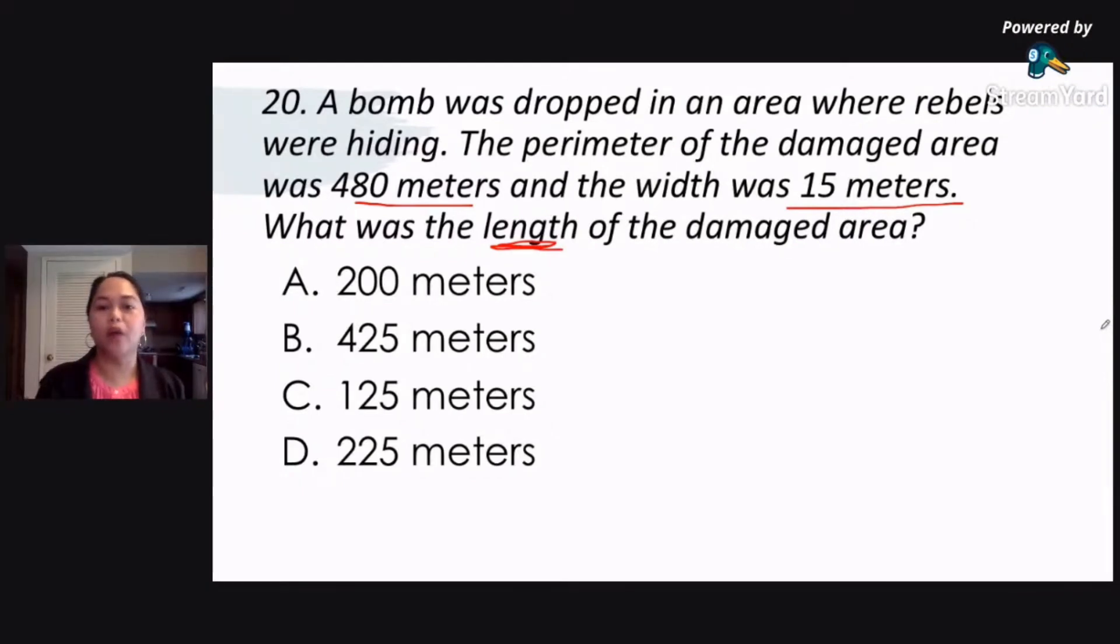Let's take a look at our computation. So again, you are given the perimeter of 480 meters and the width of 15 meters. You're asked for the length. Now perimeter is solved by multiplying 2 to the quantity length plus width. So 2 multiplied by the quantity length plus width. Now perimeter is given as 480 meters. That would be equal to 2 times the length which is unknown plus 15 meters which is our width.